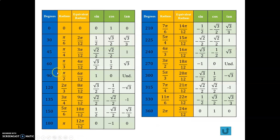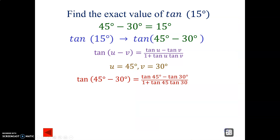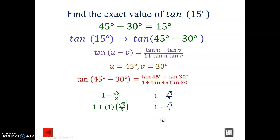Let's look up those values — 45 and 30. For tangent, we're using radical three over three for 30 degrees and one for 45 degrees. So: one for 45 and radical three over three for 30. Let's simplify, and it gives us one minus radical three over three on top, all over one plus radical three over three.